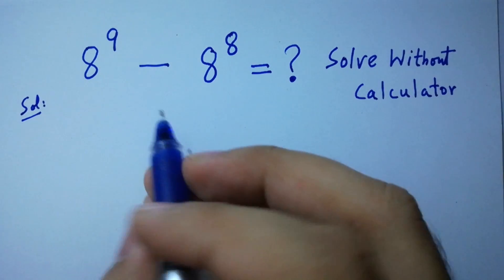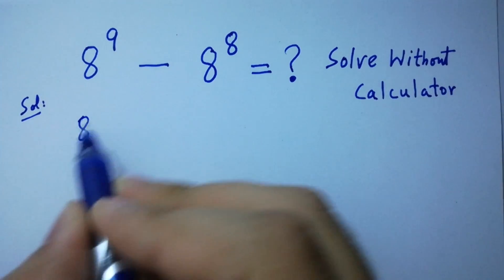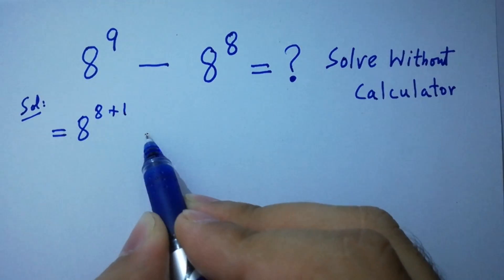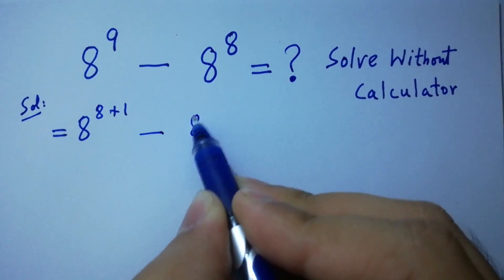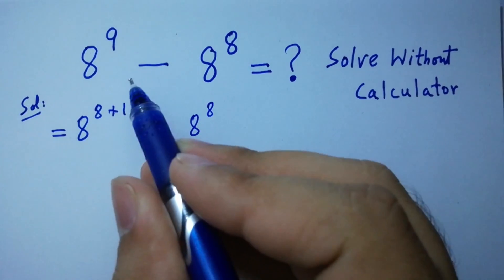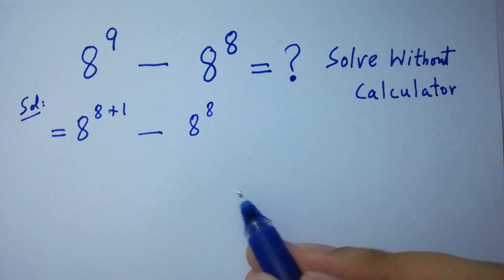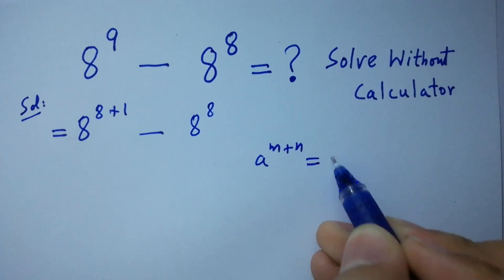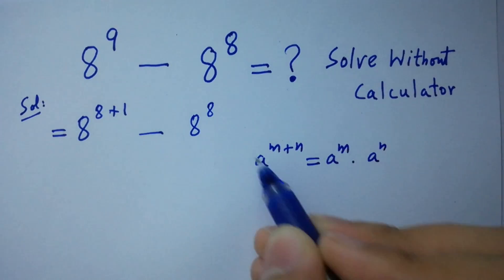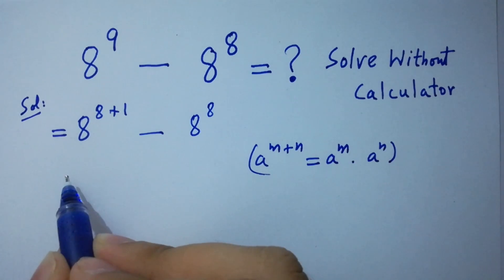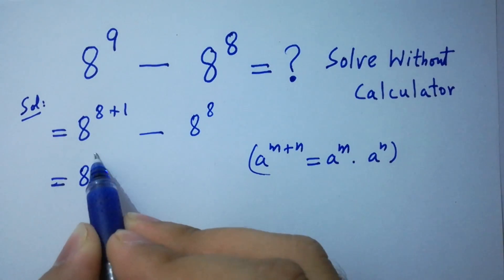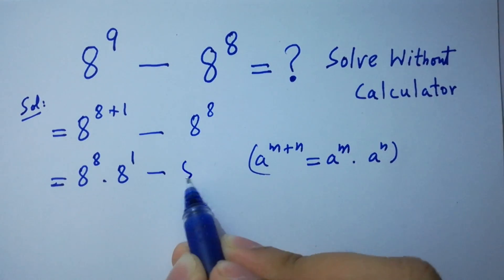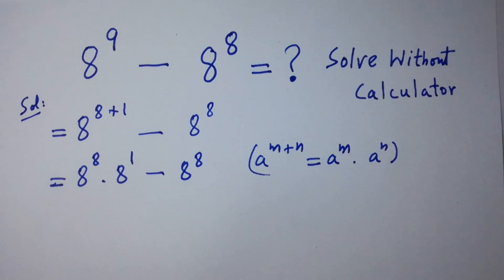This is the same as 8 to the power 8 plus 1 minus 8 to the power 8, since 8 plus 1 is equal to 9. As we know, a to the power m plus n equals a to the power m times a to the power n. Then it will be 8 to the power 8 times 8 to the power 1 minus 8 to the power 8 as it is.